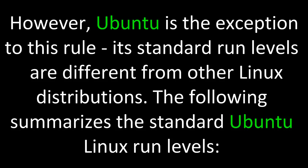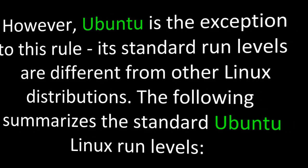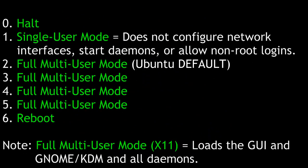However, Ubuntu is the exception to this rule. Its standard run levels are different from other Linux distributions. The following summarizes the standard Ubuntu Linux run levels: 0 is halt, 1 is single user mode where it does not configure network interfaces, start daemons, or allow non-root logins. Run levels 2 through 5 are full multi-user mode — 2 is the Ubuntu default. By full multi-user mode we mean it loads the graphical user interface and GNOME or KDM and all of the daemons. And finally, 6 is reboot.